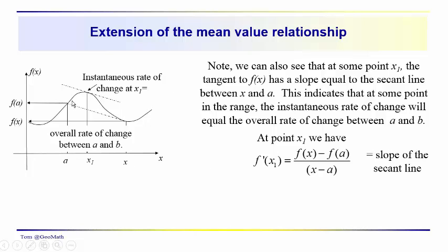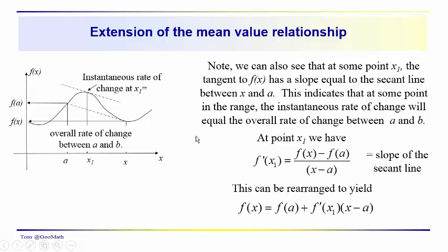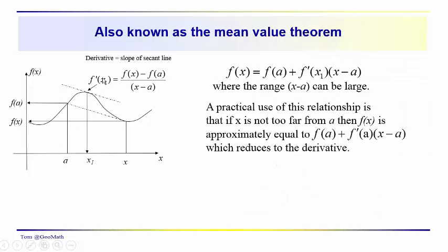That's the slope of the secant line. This can be rearranged to yield f of x equals f of a plus f prime of x1 — this average derivative, or average tangent — times x minus a, which is the range of the independent variable. This is what's known as the Mean Value Theorem. We state it in this form because a lot of what we're developing represents an approximation for some function f of x at a particular point.